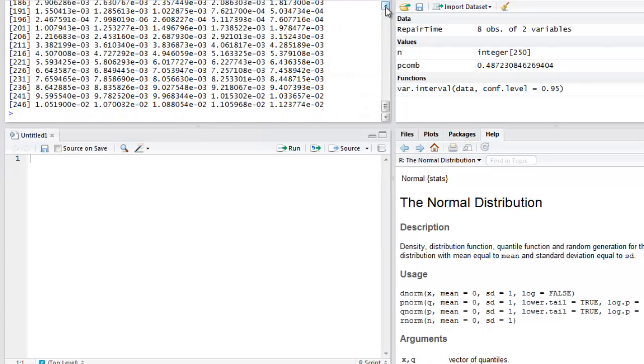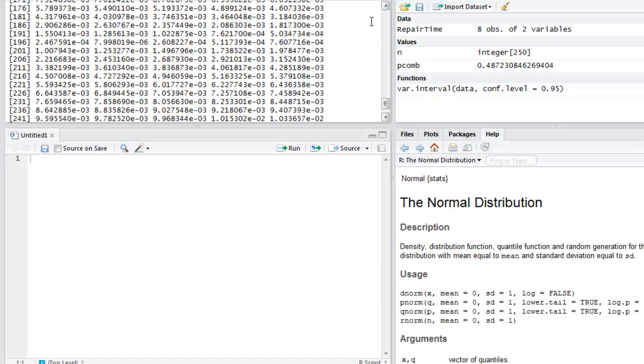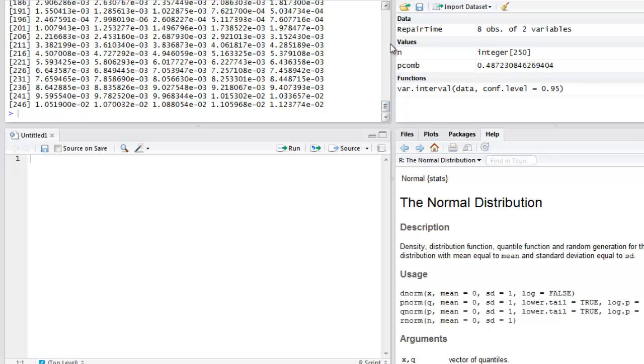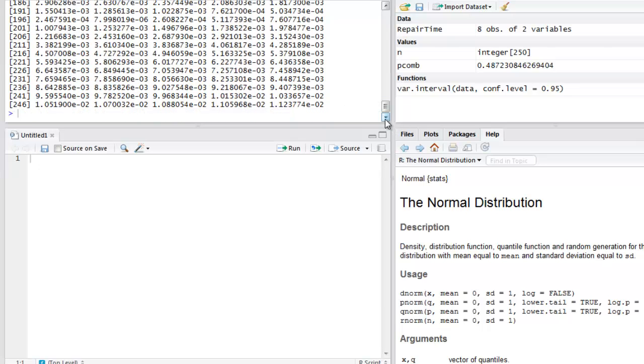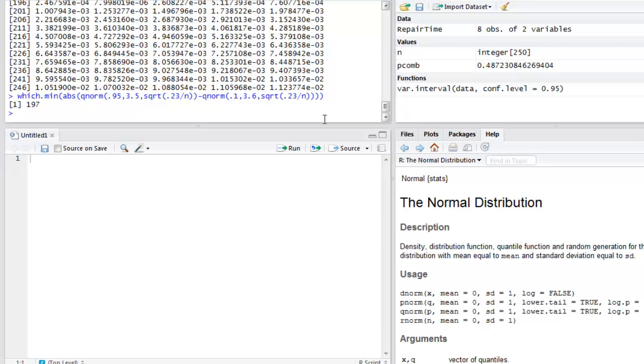You can see the values. Taking the absolute value, you can either search through here to find the smallest value. This looks like it's occurring somewhere in here. Or, R has another command called which.min. And it's going to look in this entire vector stream. And it says 197. Our sample size is 197.